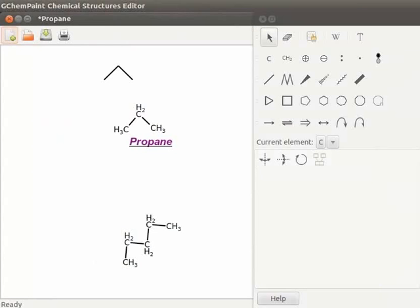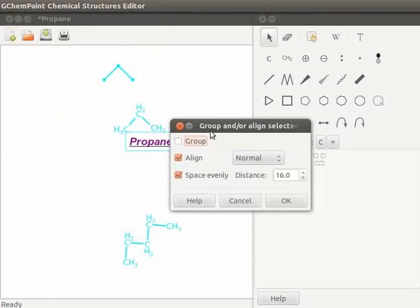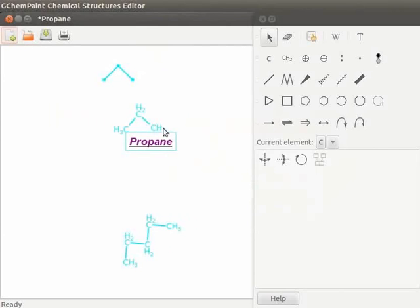Let us now group and align objects. To group objects, select all objects. For this, go to edit menu and click on select all, or you can press ctrl and a keys simultaneously. Right click on any one of the objects. The context menu opens. Select group and or align objects option. A dialog box pops up. Click on group checkbox. Uncheck align and space evenly options if they are selected. Click on ok button. We see that the objects are grouped together.